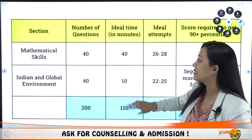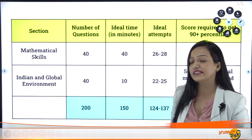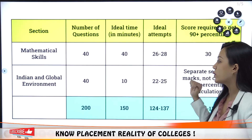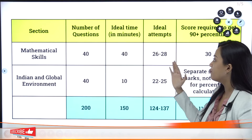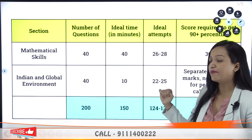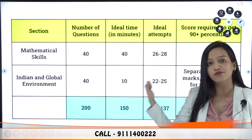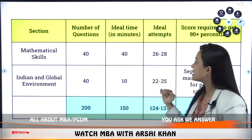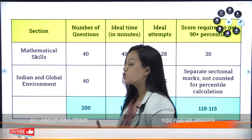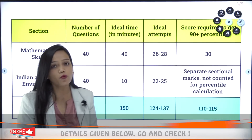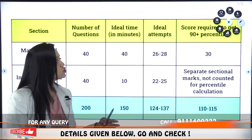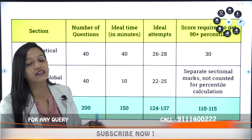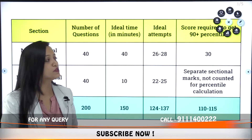If we talk about Mathematical Skills, these remain challenge questions with a time of 40 minutes. The ideal attempts are 26 to 28 questions, going up to 30 to 35. The score required is 90 plus percentile in this section as well.